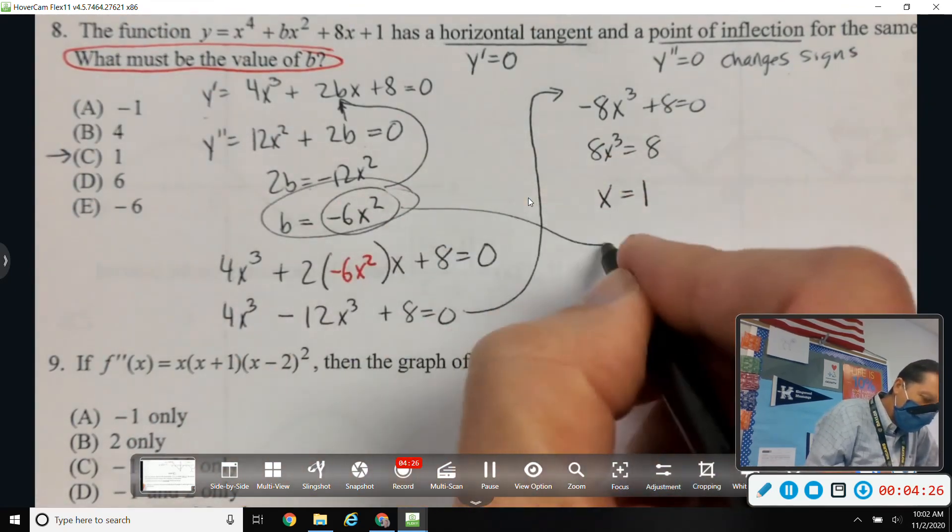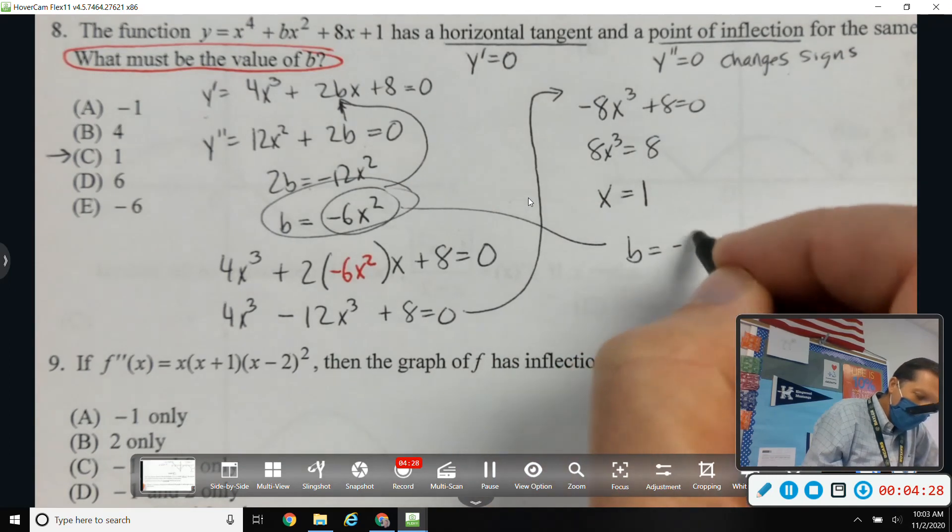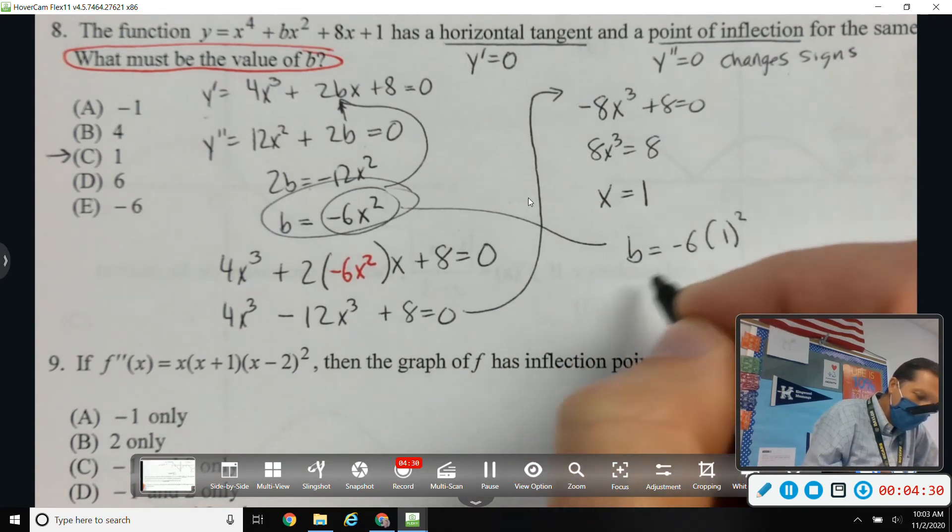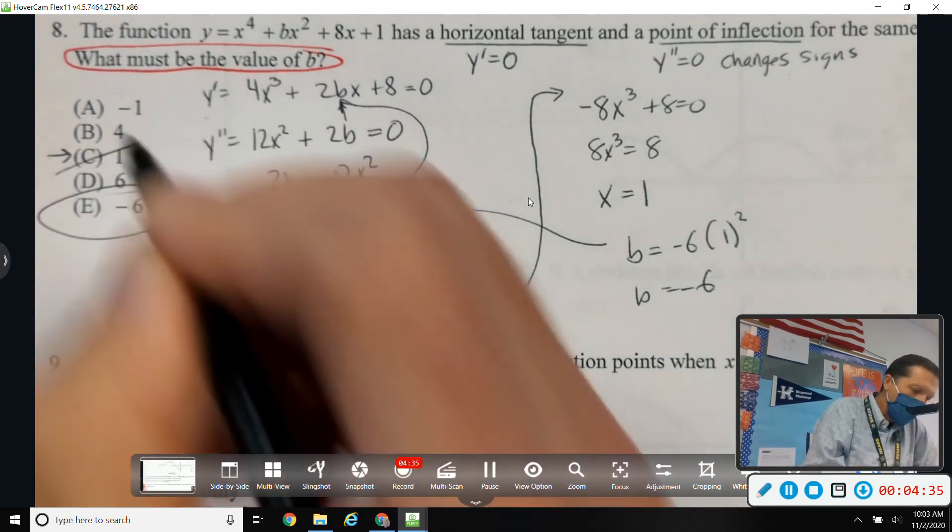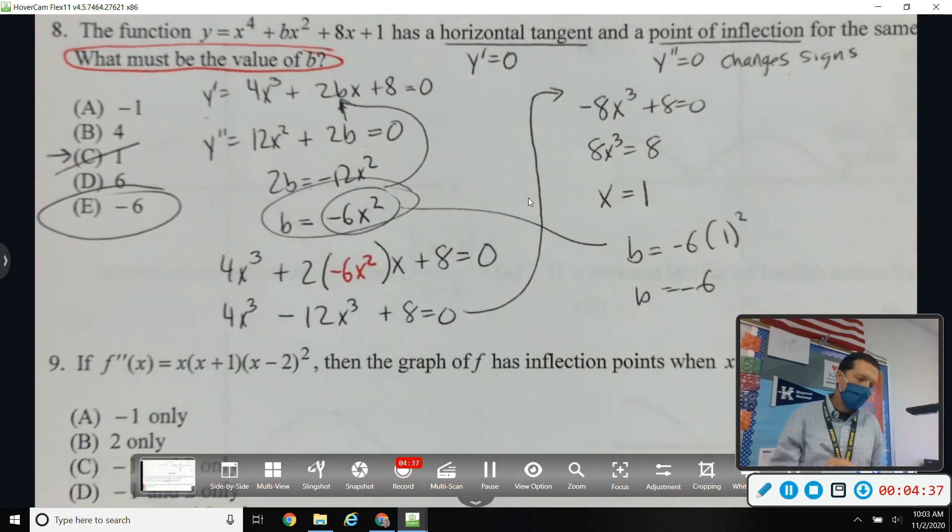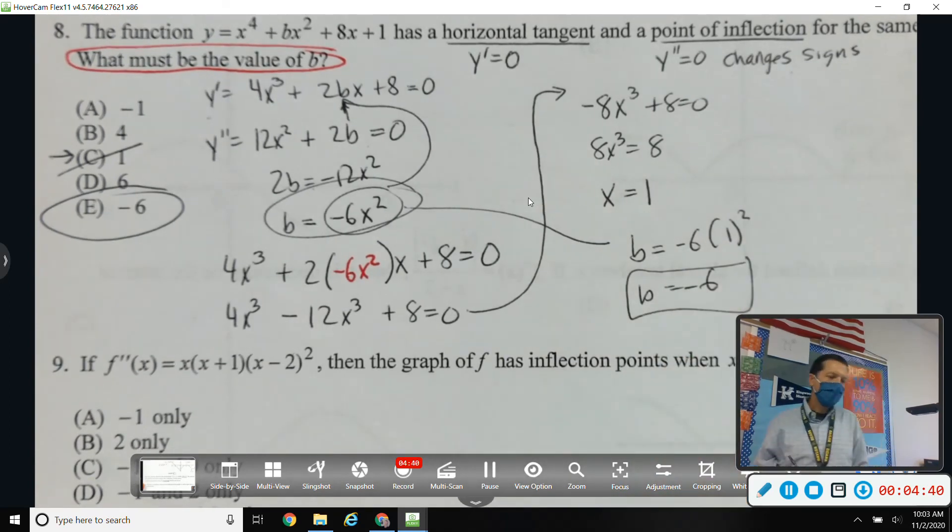Well, we said B is equal to negative 6 times x squared. So, B is negative 6. So, C was maybe tempting, but the answer is negative 6. B is equal to negative 6.